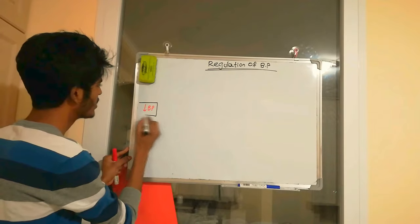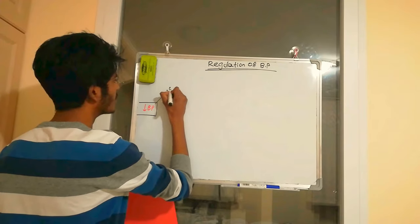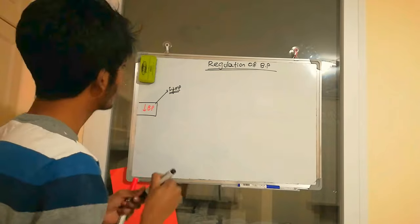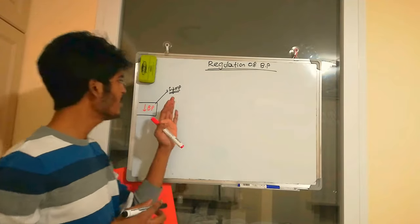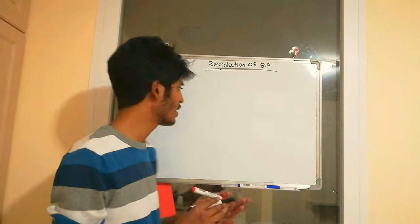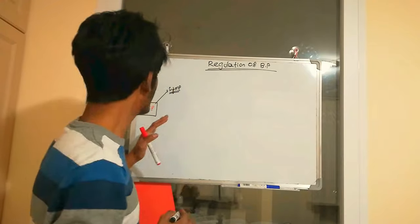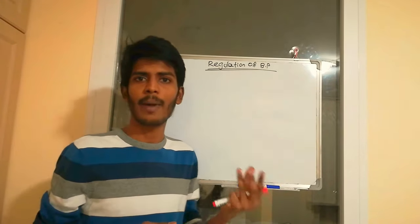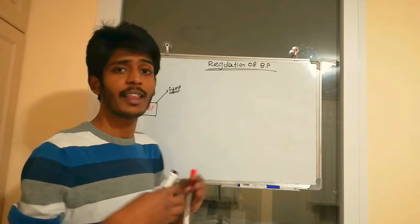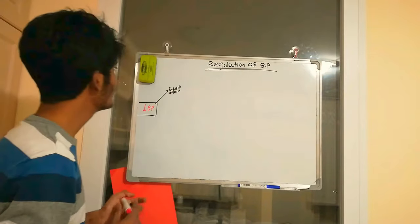We have the autonomic nervous system, which will stimulate the sympathetic nervous system. The sympathetic nervous system is stimulated by baroreceptors, which are located in the arch of the aorta. 'Baro' means pressure — when pressure is decreased, these receptors are stimulated, leading to activation of sympathetic activity.